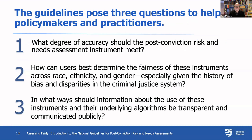The guidelines overarchingly pose three questions to help policymakers and practitioners. First: what degree of accuracy should post-conviction risk and needs assessment instruments meet? Second: how can users best determine the fairness of instruments across race, ethnicity, and gender, given the history of bias and disparities within the criminal justice system? Third: in what way should information about the use of these instruments and their underlying algorithms be transparent and communicated publicly?